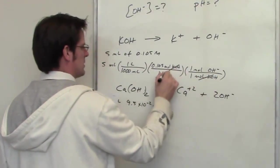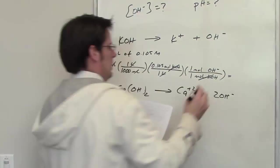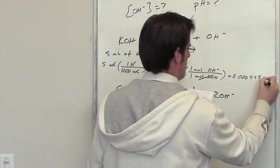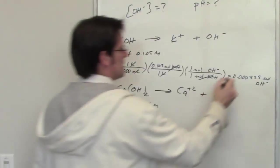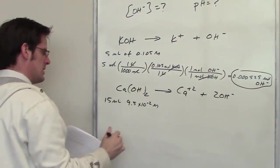My moles of KOH cancel each other out, my liters cancel each other, my mils cancel each other out. And I throw that into my calculator and I end up getting .000525 moles of hydroxide from the KOH. So this is the amount of moles of hydroxide from this. Now we'll go down to this one.